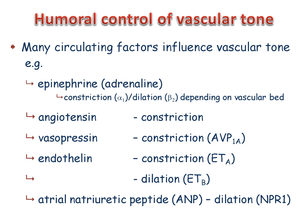Endothelin is a 21 amino acid peptide and the most potent vasoconstrictor known. It is synthesized mainly in the endothelium of blood vessels but circulates in blood and can be made by other cell types. Plasma levels of endothelin are raised in several cardiovascular disorders. Endothelin constricts arteries by activating ETA receptors on vascular smooth muscle, but there are endothelin receptors of the ETB subtype on the endothelium which have the opposite effect.